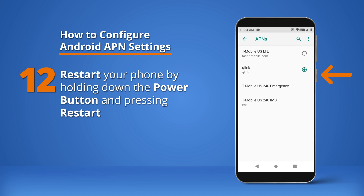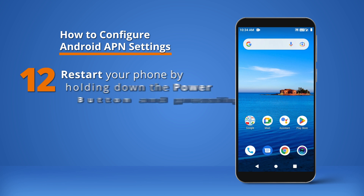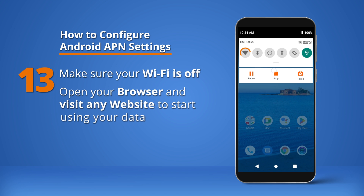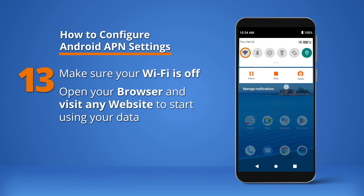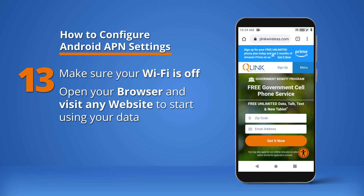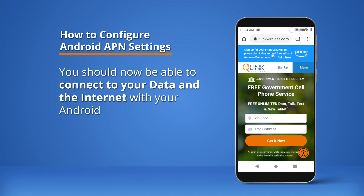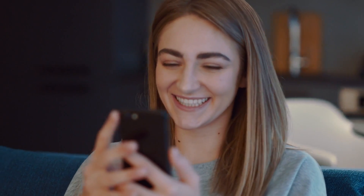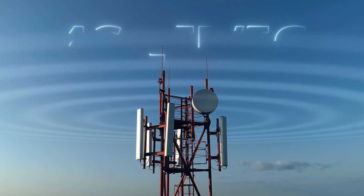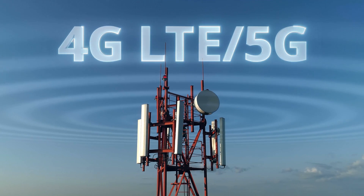Restart your phone by holding down the power button and pressing Restart. Make sure your Wi-Fi is off. Open your browser and visit any website to start using your data. You should now be able to connect to the internet with your Android. You're ready to plug and play on one of America's largest 4G LTE and 5G networks.